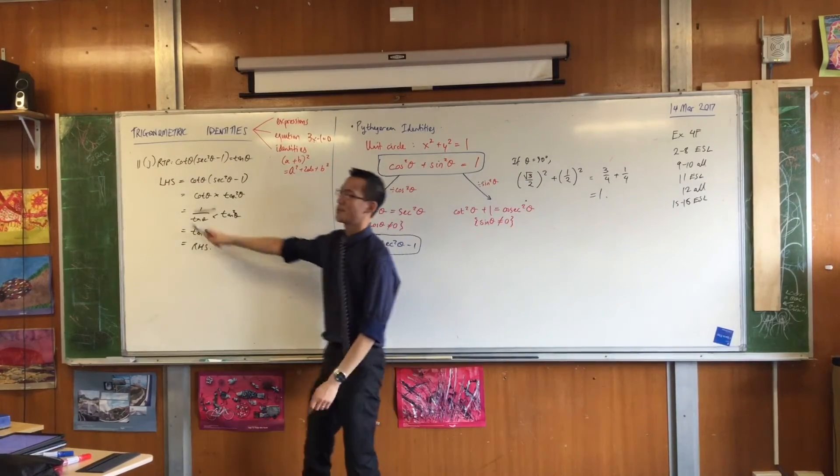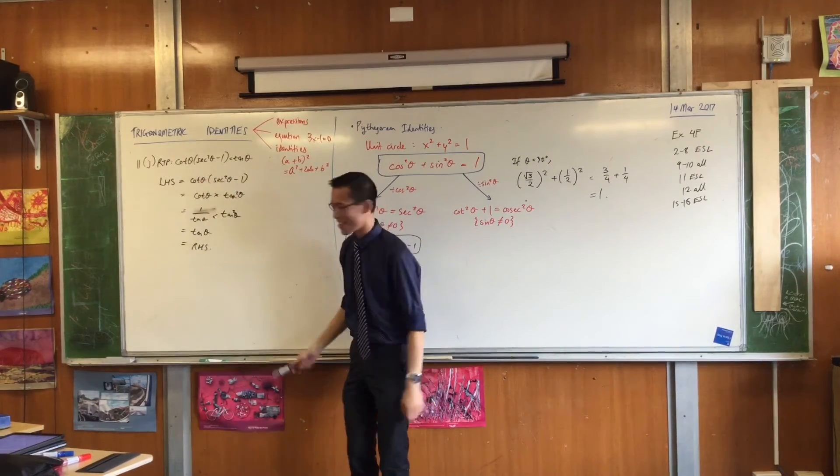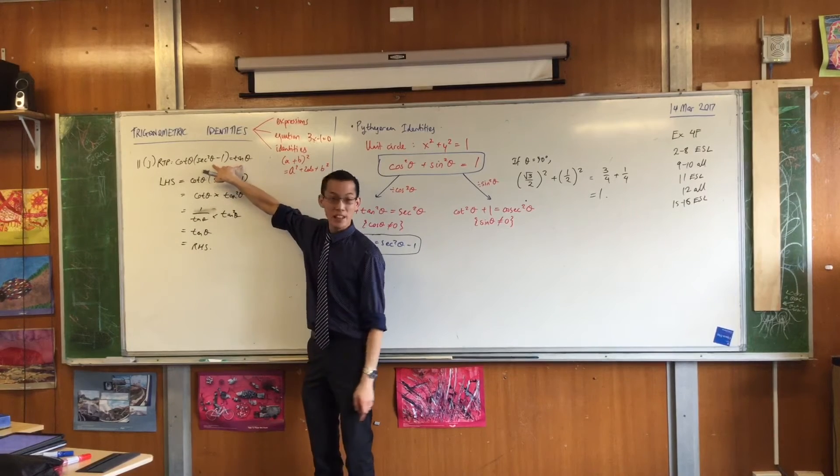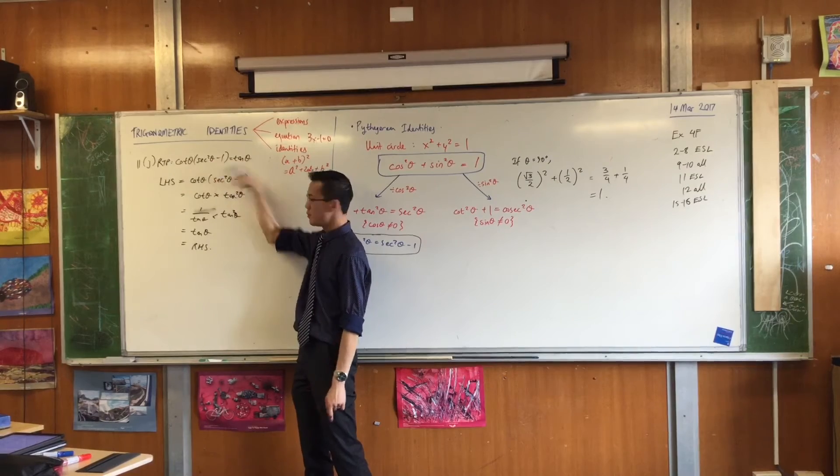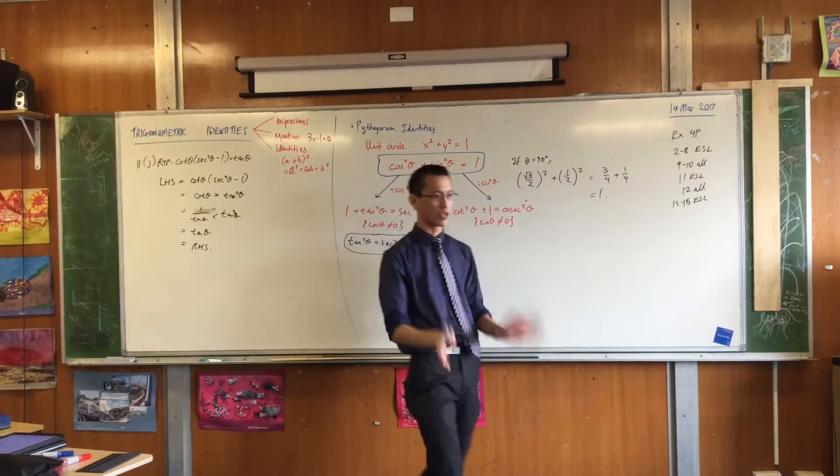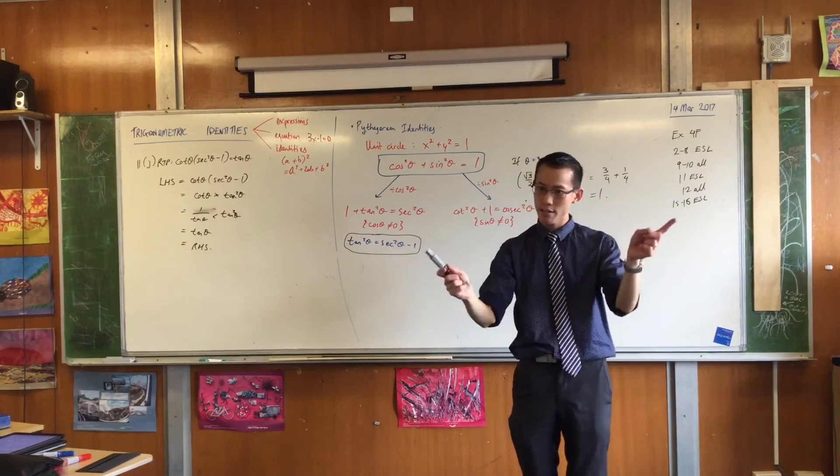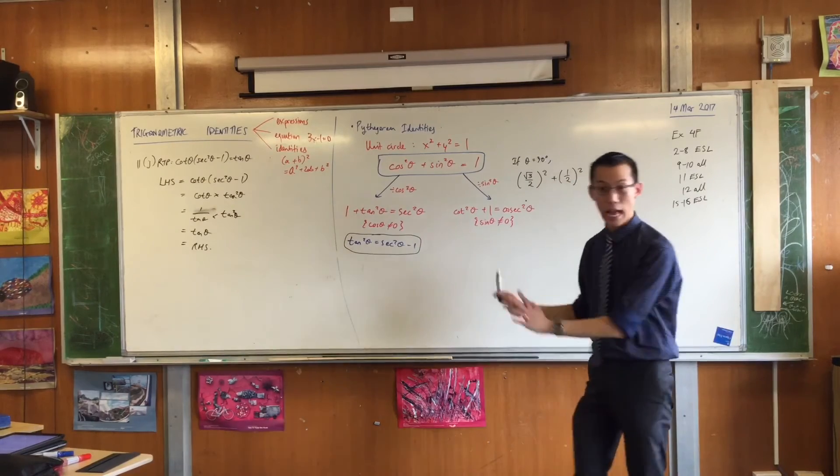Now, please make sure you start on one side, and then move to the other. Lots of people, they look at this, and then they just start working on it. They're like, I'll multiply both sides by cos, and then I'll move this to the other side, and it just becomes a dog's breakfast, okay? Move from left to right, or right to left, and you're done.